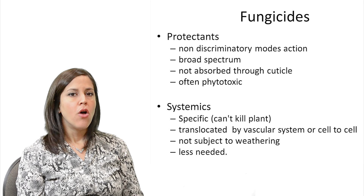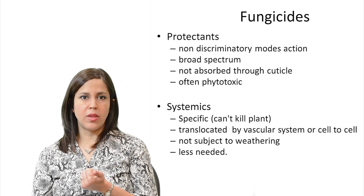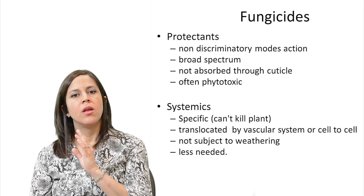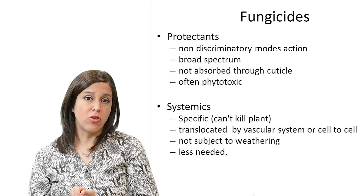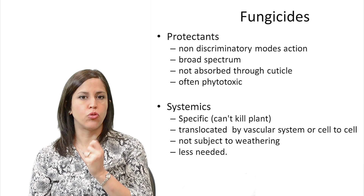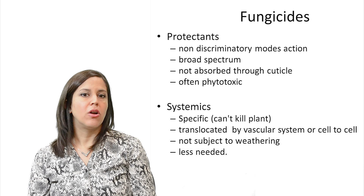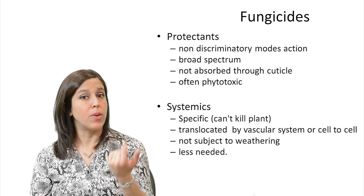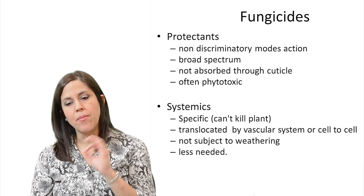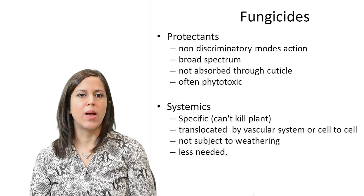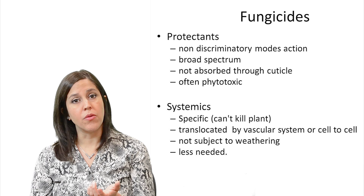Fungicides can be used as protectants, which are broad spectrum, not absorbed through the cuticle, and often phytotoxic. Others are systemic — absorbed into the plant, very specific, translocated through the vascular system and cell to cell, not subject to weathering, requiring less product because they circulate inside the plant and provide better protection. However, systemic fungicides are very specific and not broad range.